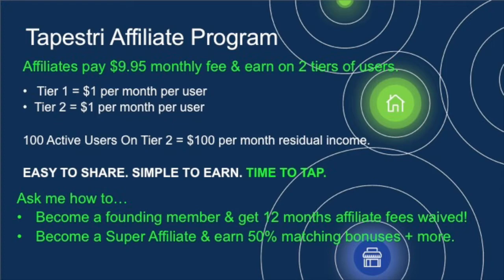If you'd like to become an affiliate prior to the app launching, pay a one-time $9.95 activation fee for your affiliate account and the next 12 months of affiliate fees will be waived, as long as you activate before our app goes live. We're currently submitting the app to Android and Apple — it should be live by the end of June 2021. For those interested in becoming super affiliates, building a small team of 10 personal affiliates, you'll also maximize earning potential with matching bonuses and Tapestry users.